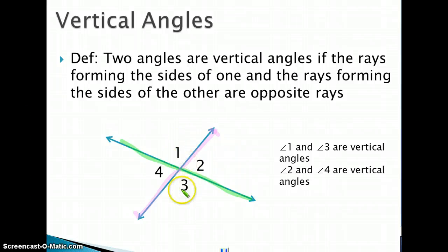You'll notice that when we have an opposite ray going in this direction, another opposite ray in the green, these two angles here, angle 2 and angle 4, are formed with the sides of those same opposite rays. Similarly, angle 1 and angle 3 are formed by the same pair of opposite rays. So angle 1 and angle 3 are vertical angles, and angle 2 and angle 4 are vertical angles.